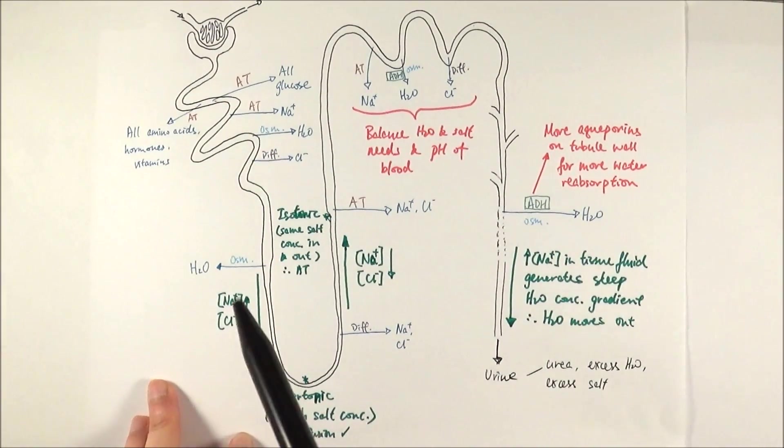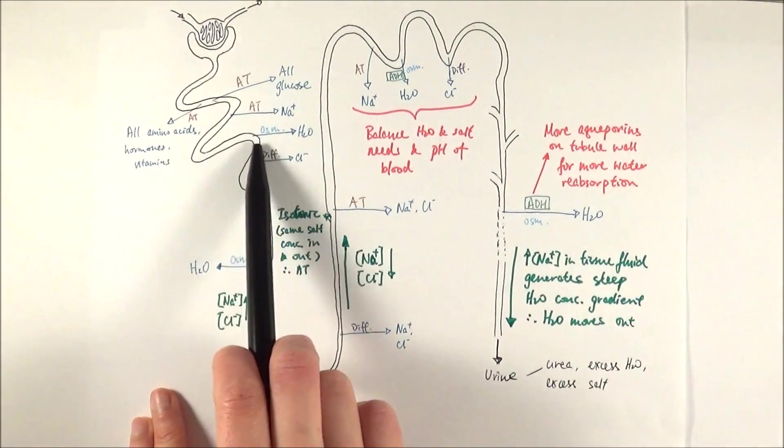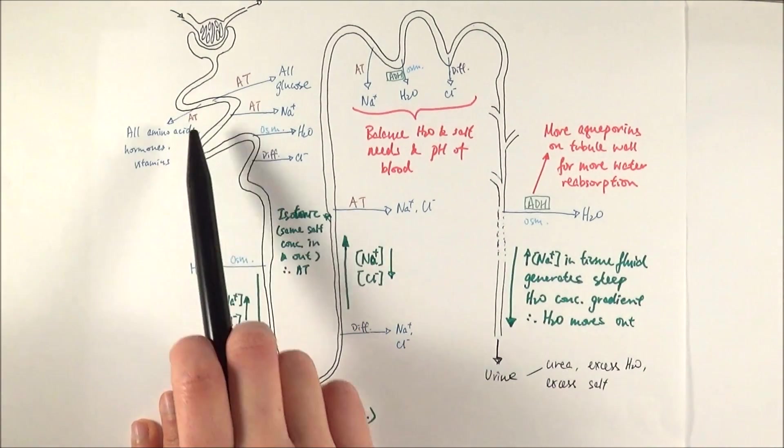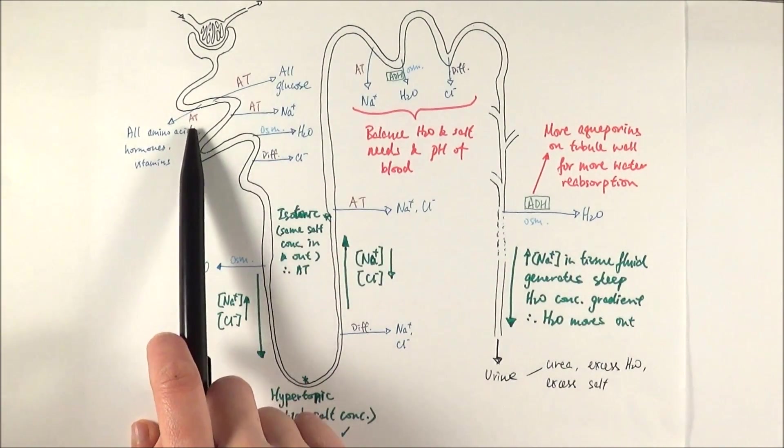So very quickly, a recap. Ultrafiltration happens in the glomerulus and the filtrate travels through the proximal convoluted tubule. Here, all of the glucose, amino acids, hormones and vitamins are reabsorbed completely by active transport.